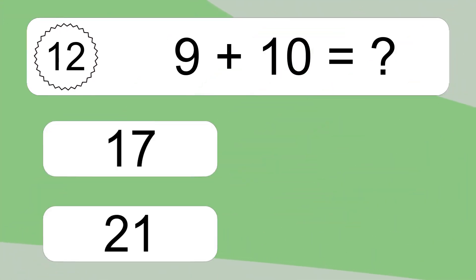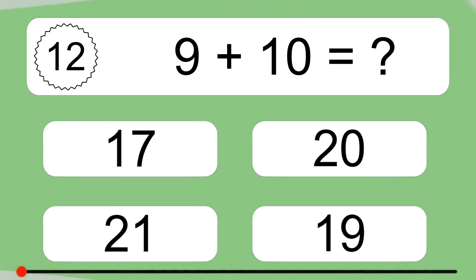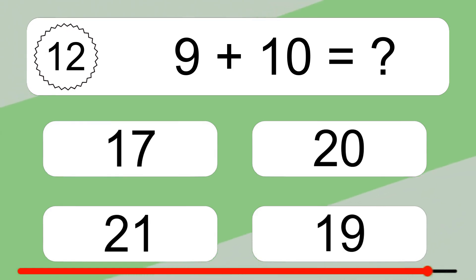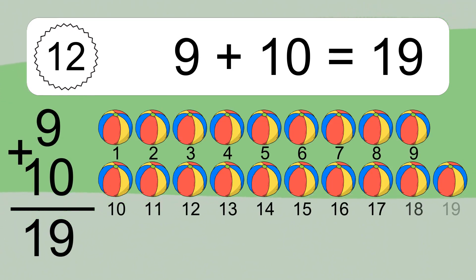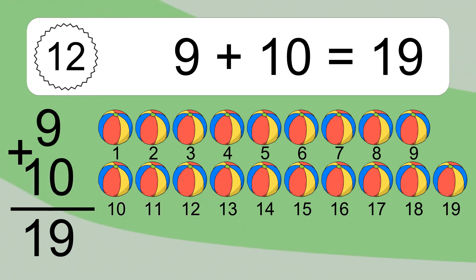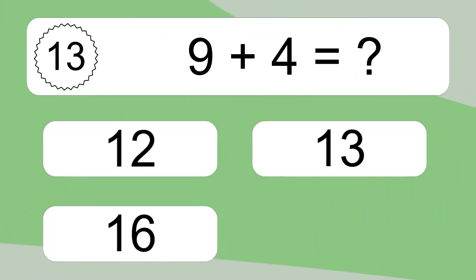9 plus 10 equals what? 9 plus 10 equals 19. Let's count it: 1, 2, 3, 4, 5, 6, 7, 8, 9, 10, 11, 12, 13, 14, 15, 16, 17, 18, 19.